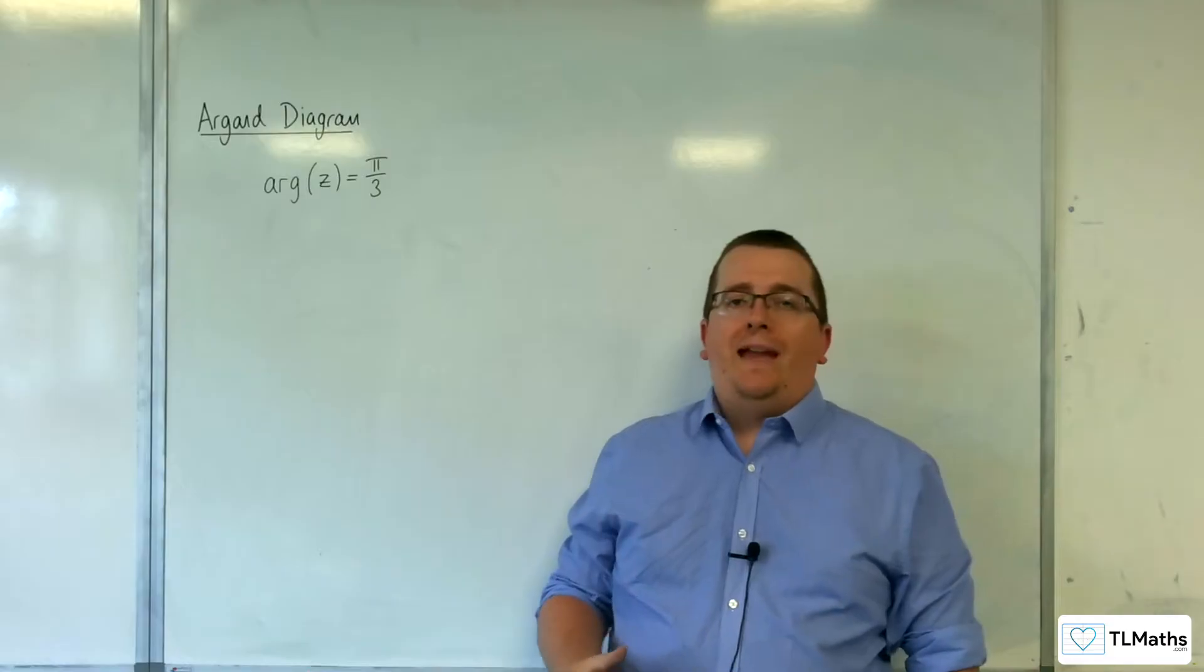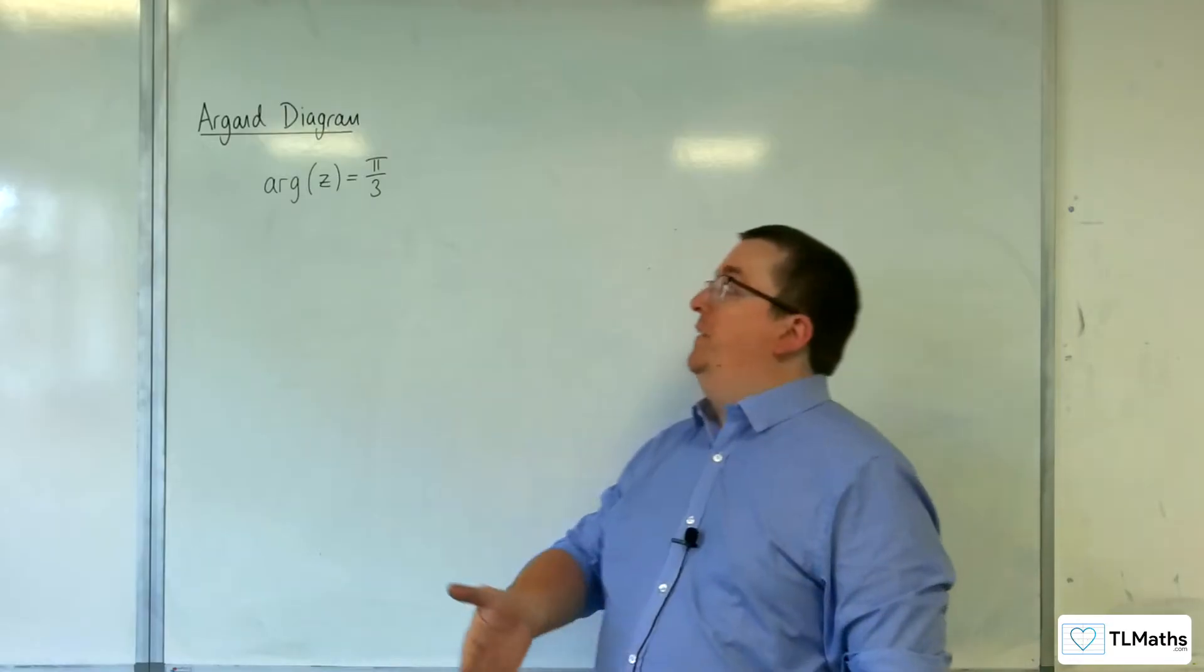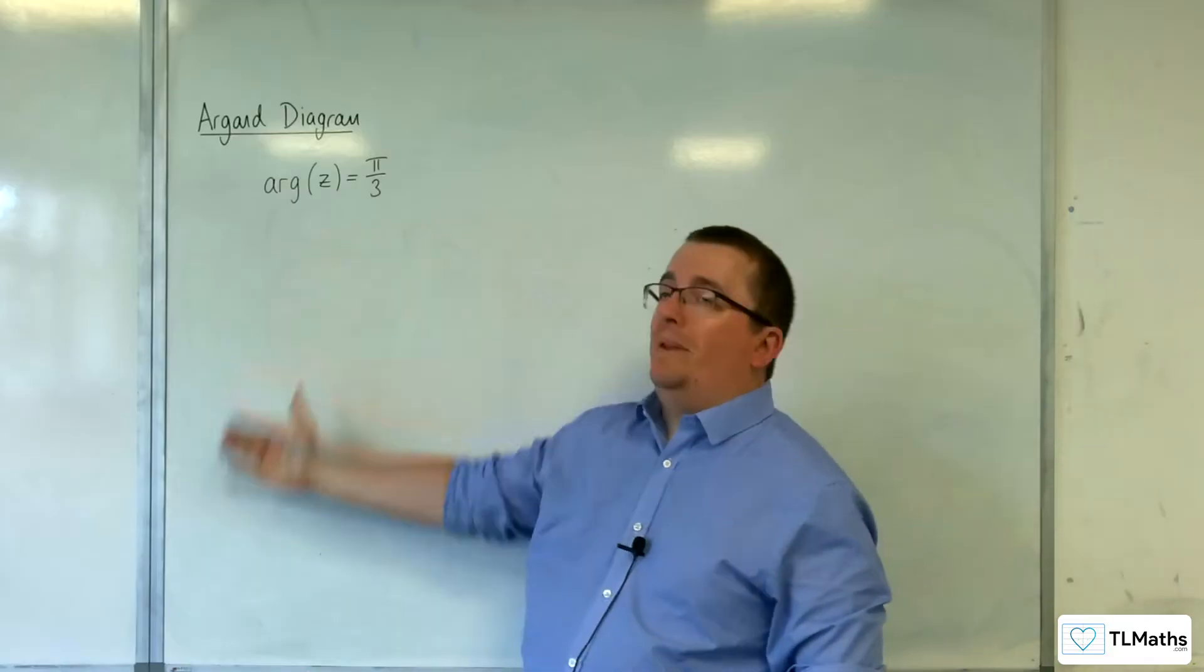In this video, I want to investigate how to find the Cartesian equation of the half-line represented by the argument of z being π/3.